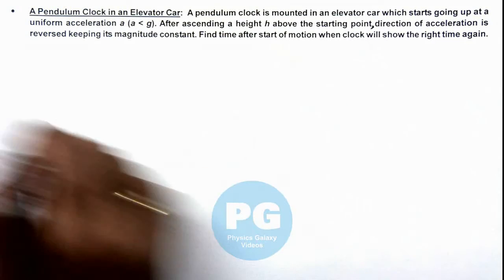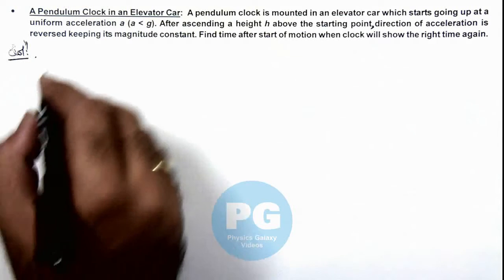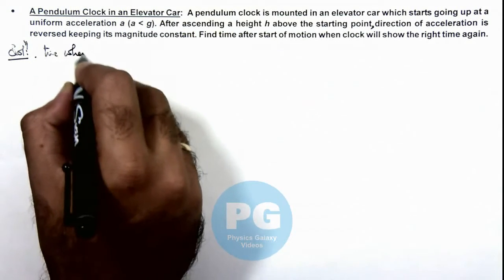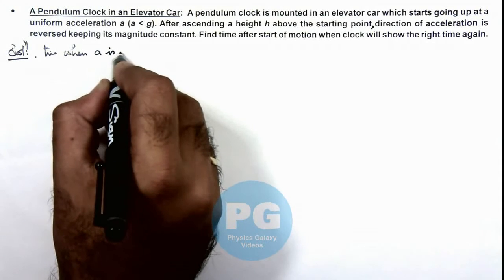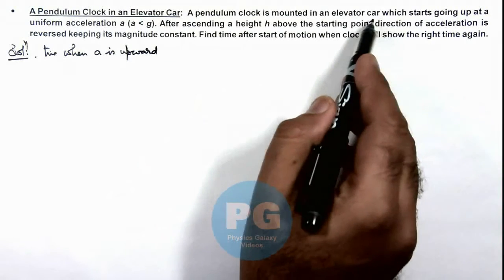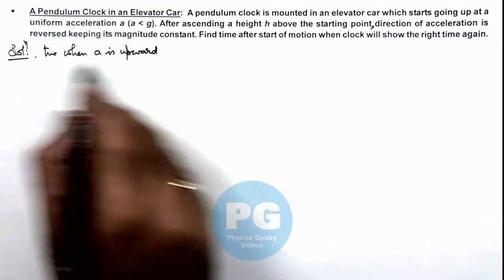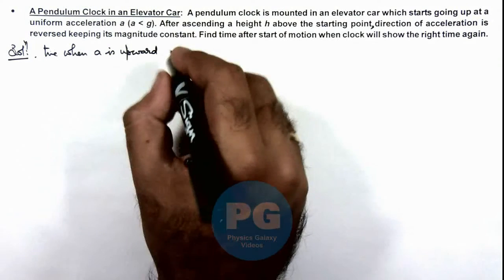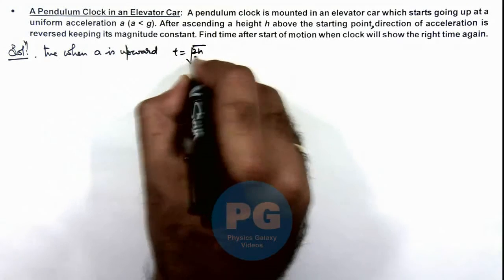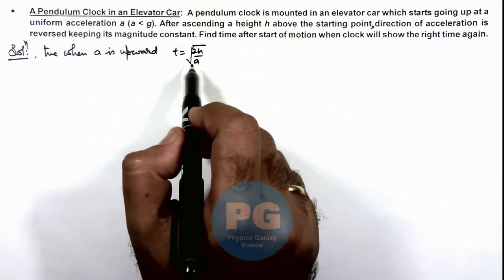In the solution, first we consider the time when ay is upward. Initially the car is going up at an acceleration ay, so the time for upward motion can be directly written as root of 2h by ay, because up to height h it travels with an upward acceleration ay.